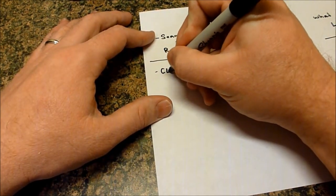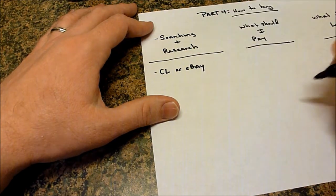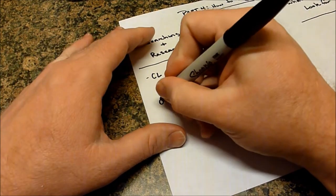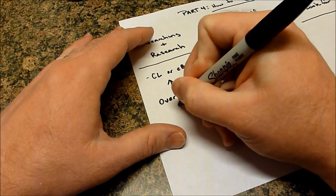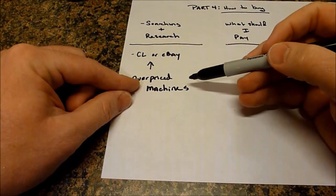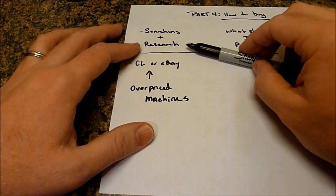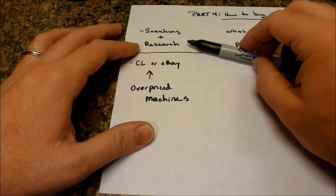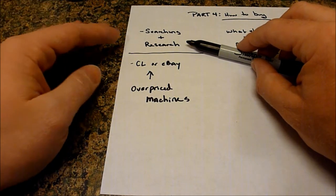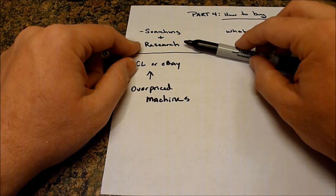So you start off with Craigslist, or CL, or you go to eBay and do a search. What is that going to yield you? That's going to yield you overpriced machines. I would encourage you to use forums and online information there, maybe even get on eBay and buy a couple of older brochures if you're after an old machine. That's about all I'm going to say about research.